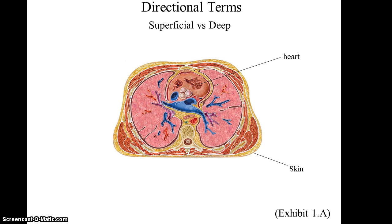Another set of directional terms is superficial versus deep. Superficial means more toward the outside, while deep means more toward the inside. In this case, we see that the heart is deep to the skin.